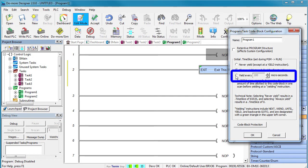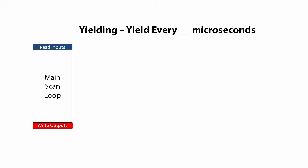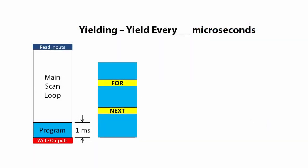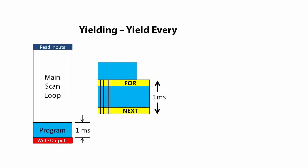And finally this option takes that one step further. Suppose you know you can afford for a program or a task to take let's say one millisecond of scan time without adversely affecting your main scan loop. Well, you put one millisecond here and now the program or task will run as many loop iterations as it can until the 1000 microseconds expires.